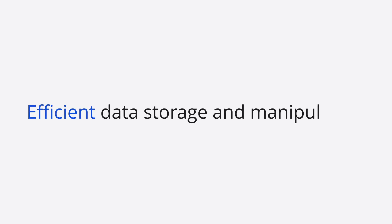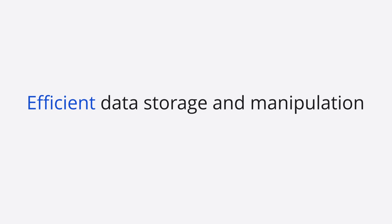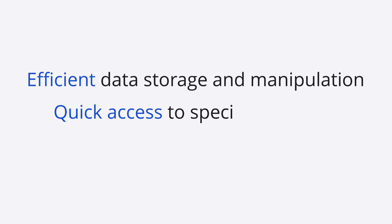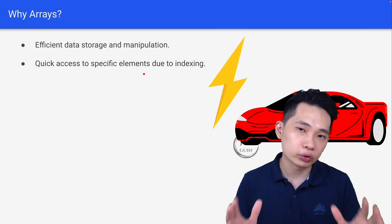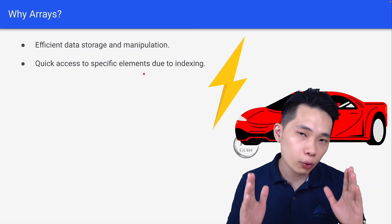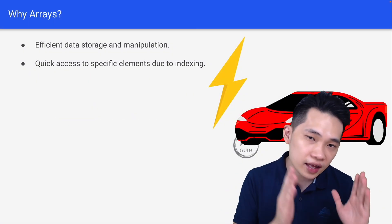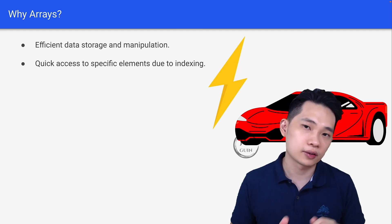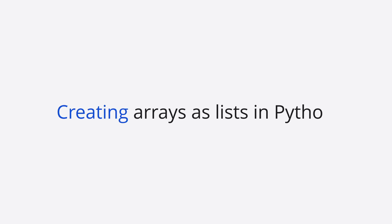And why do we use arrays? First of all, we use arrays because they have efficient data storage and manipulation. Furthermore, it allows us to have quick access to specific elements due to indexing. You can always access the elements inside the array using an index. Now let's look at how we can create a 1D array, which is a list in Python.